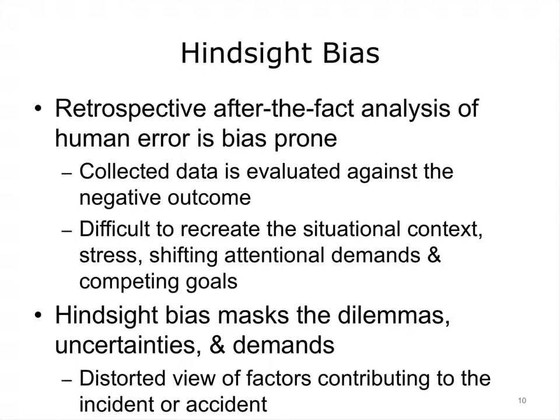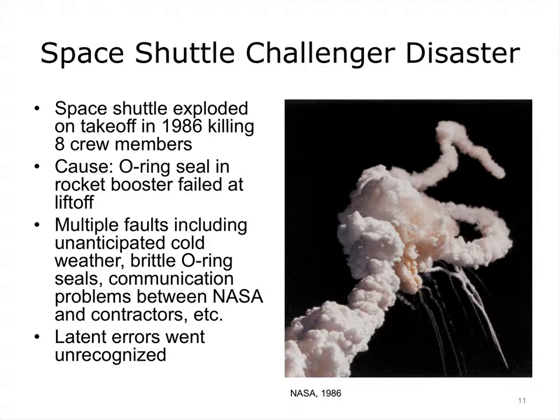The space shuttle Challenger disaster in 1986 and the Three Mile Island nuclear reactor accident in 1979 represent watershed events in the history of human factors analysis. In both cases, careful scrutiny revealed multiple faults. In the case of the Challenger disaster, the proximal cause was the failure of an O-ring seal causing a booster rocket to explode at takeoff. However, closer study revealed a litany of latent conditions, including poor communications and lack of preparation for cold weather conditions, that enabled the disaster. As a result, the shuttle exploded and all eight astronauts were killed.